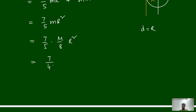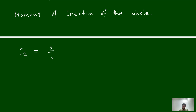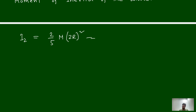So I1, the moment of inertia of the smaller part, is (7/40)MR². Now we calculate the moment of inertia of the whole sphere before removing the part. That is I2, which equals (2/5)M·(2R)², giving (2/5)M·4R², which equals (8/5)MR². This is the moment of inertia of the full larger sphere.